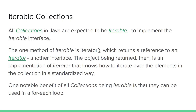The collections interface implements the iterable interface, which means all collections in Java are expected to be iterable. The one method in the iterable interface is iterator with a lowercase i, which returns a reference to an iterator, which is another interface.